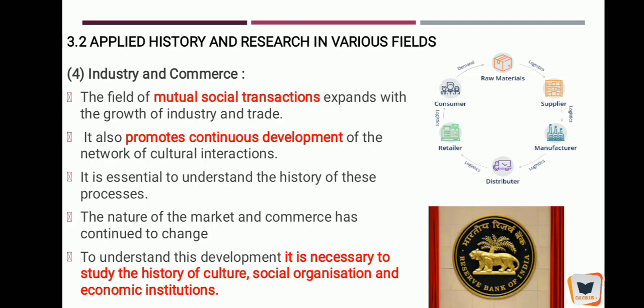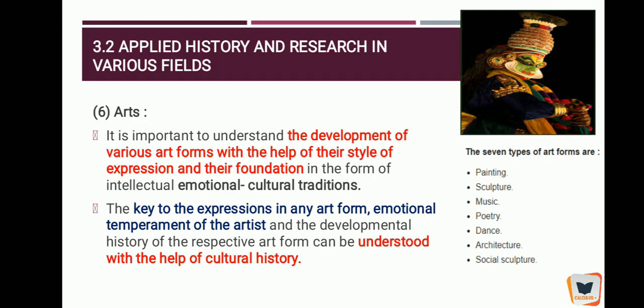So now you have a basic idea of why history is important — in philosophy, science, technology, and industry and commerce. Next we study arts. Painting, sculpture (like making Ganpati idols), music, poetry, dance forms, classical Indian dance, architecture (like the Taj Mahal), and social sculpture are all part of arts. For example, dance forms have changed — modern dance is more western in style — but the basic expressions like happiness have not changed. That's why we need to know the history of art as well.